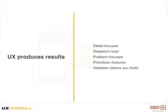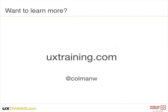So that brings us to the end of the talk. Just to recap, why does UX produce better results? Because it's detail-focused, because it's research-led, because it's problem-focused, because it helps people prioritize features, and because it allows us to validate our designs and products before we go to the expensive business of building them. If you'd like to learn more about why UX produces better results, you can visit our website, uxtraining.com, or you can ask me questions directly on Twitter at Coleman W. I'll now hand you back to Dara for some closing thoughts.